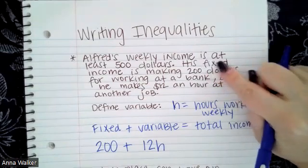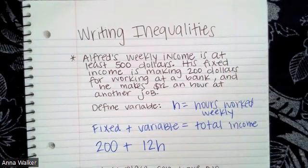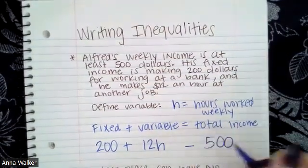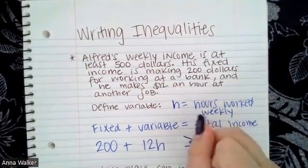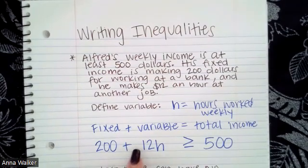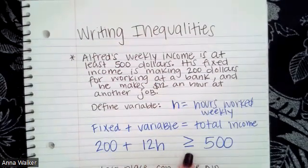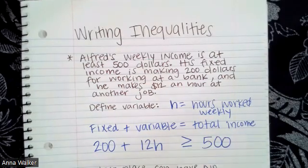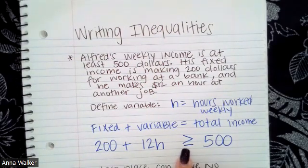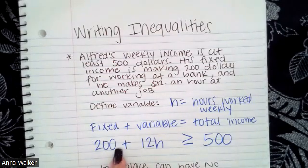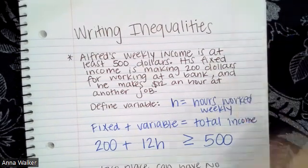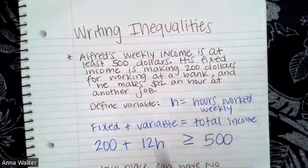We also know that his weekly income is at least $500. 'At least' means that he makes exactly $500 or he could make more than $500. So the amount that he makes per week — this 200 plus $12 per hour he works — he either makes exactly $500 from that every week, or sometimes he makes more, depending on the number of hours he works. So the symbol greater than or equal to is how we would represent this. This shows us an inequality that represents all of Alfred's financial income situations: his fixed and his variable compared to his total income.